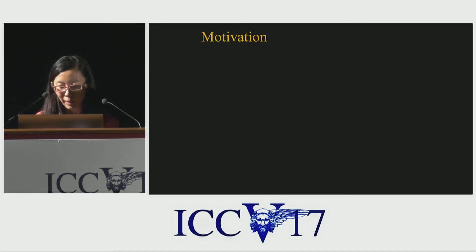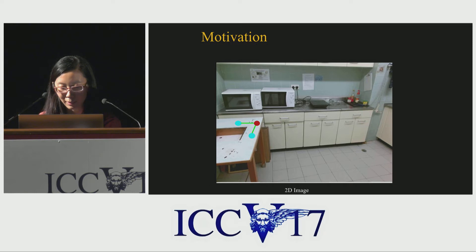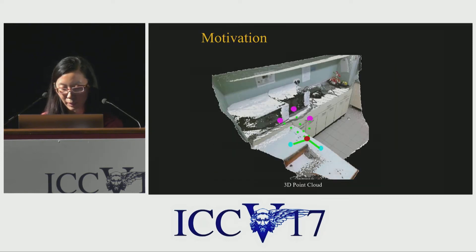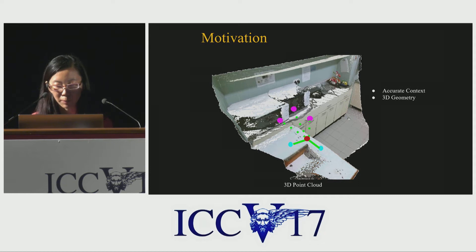These approaches are 2D solutions and do not fully utilize 3D geometric information. Let's look at an example. When we are in 2D, the red point on the table may have similar distances to points lying on the table and points lying on the counter. While in 3D, they are naturally separated following the structure of the objects. 3D point cloud can provide more accurate context and 3D geometric information.